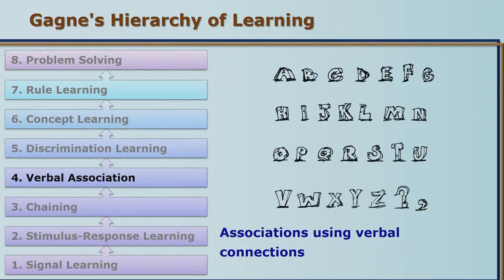Next, we learn to associate words with stimuli. We are able to recognize different objects or stimuli with names. For example, we are able to say this is a flower, these are trees, this is a forest, these are tides, these are animals. Such verbal association is the next level of learning.